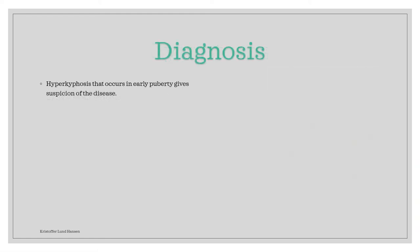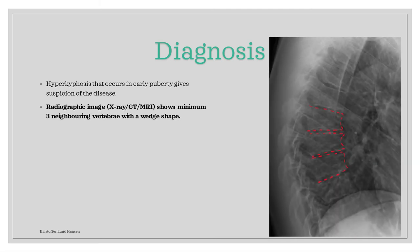The diagnosis starts always with suspicion, and Scheuermann's disease should always be considered in teenagers that have developed hyperkyphosis. A radiographic image, which can either be an X-ray, CT, or MRI, is needed to diagnose. If you can see at least three continuous vertebrae with a wedge shape, then you can diagnose Morbus Scheuermann's disease. The X-ray shown here shows exactly three neighboring vertebrae with a wedge shape. The wedge is not extremely pronounced, but it's definitely there.